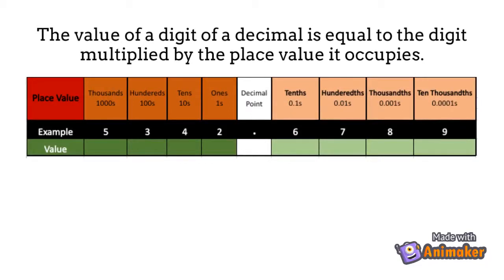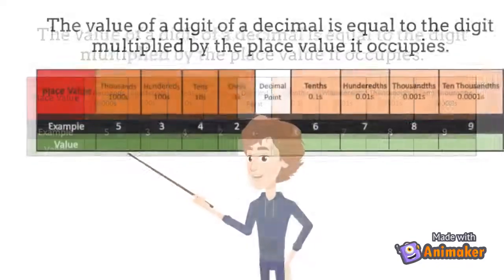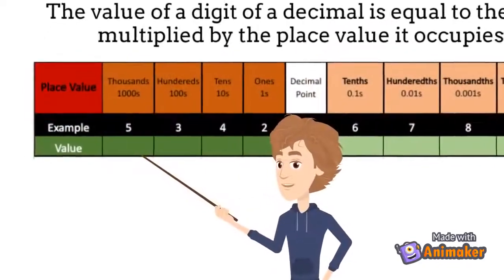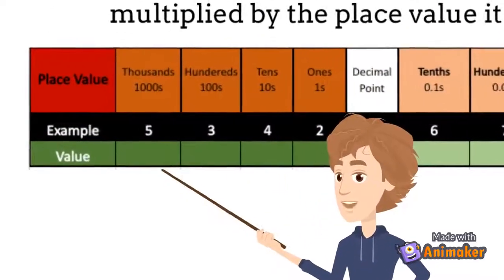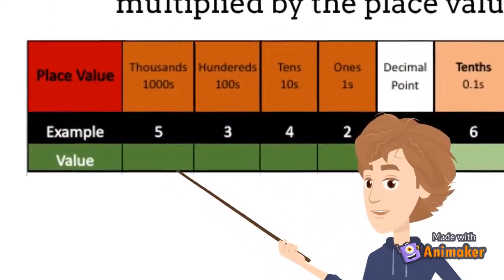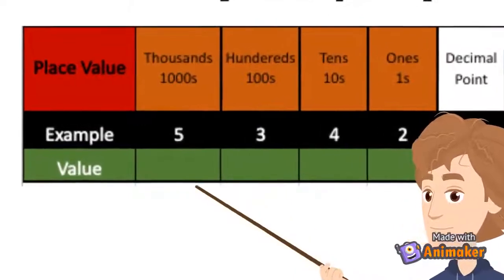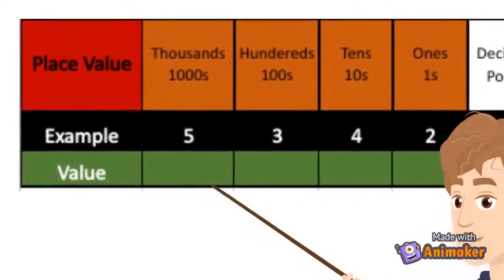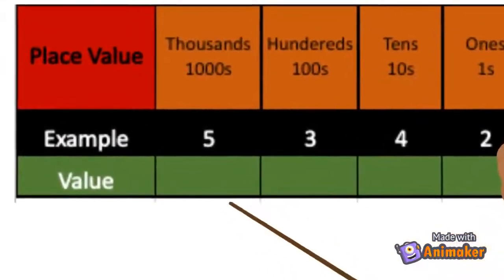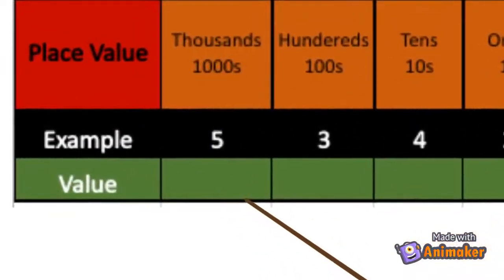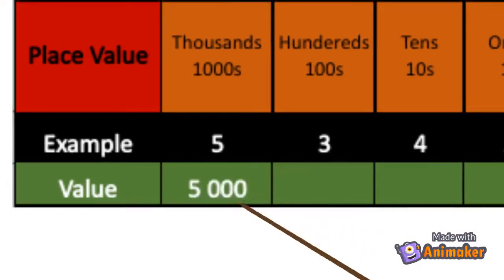Let's have an example: in 5342.6789 ten-thousandths, the digit 5 is located in the thousands place. Its place value is thousands. To find the value of 5, it is multiplied by 1000. Therefore its value is 5000.